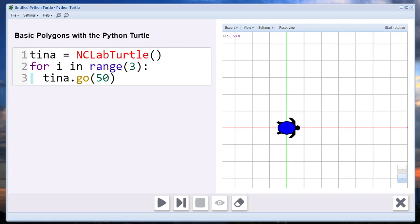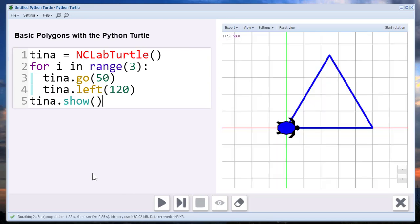And then I'm going to turn the turtle left 120 degrees. That's it. The last thing I want to do is write a command that displays what I have just drawn, and for that we use the show command. So let's see what this looks like.